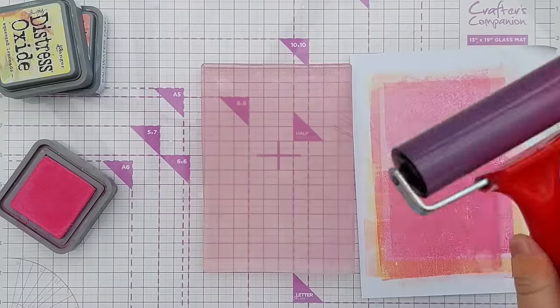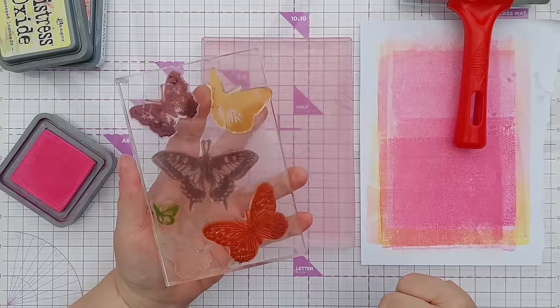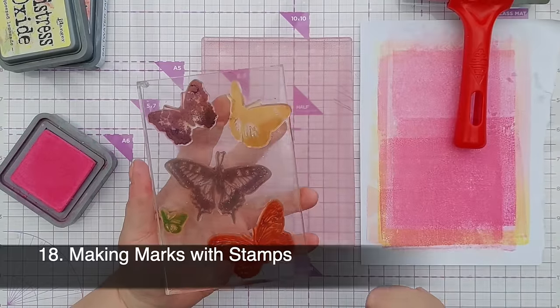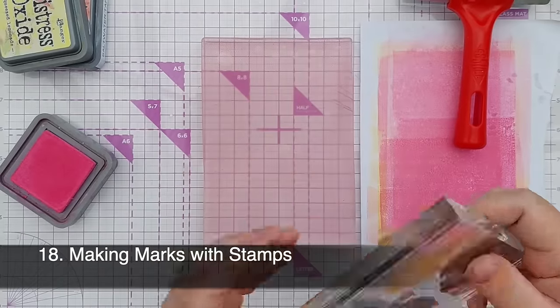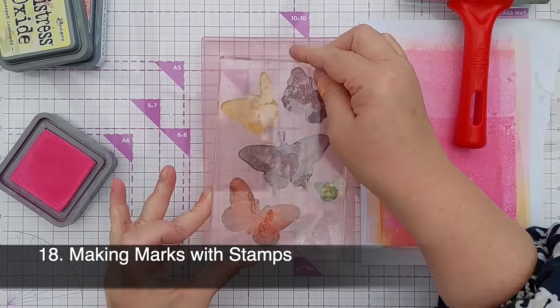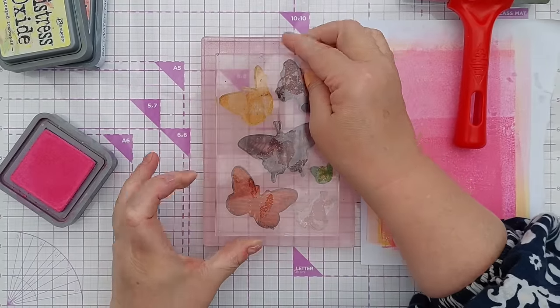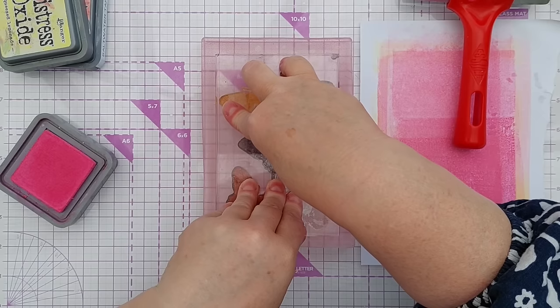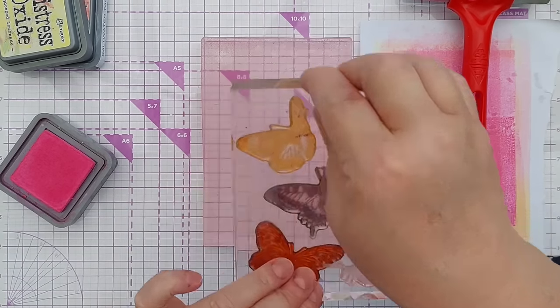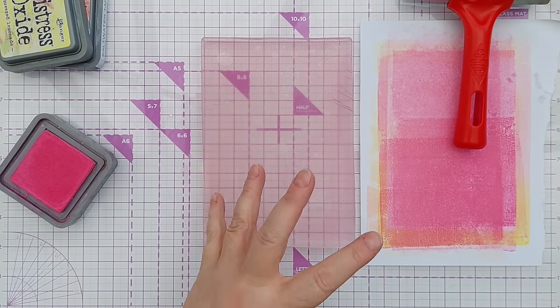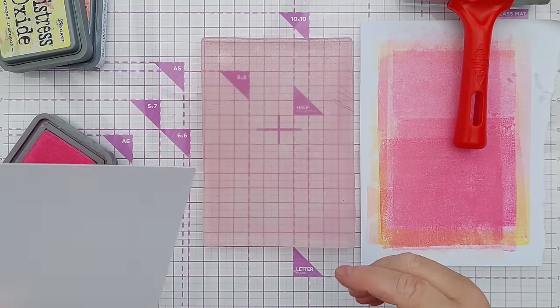And now I'm going to use some stamps. I've got some photopolymer butterfly stamps here and I've put them on an acrylic block and I'm going to press them down onto my gel plate. And when I lift it up that should have lifted off some ink.